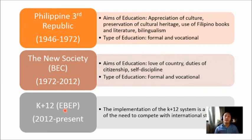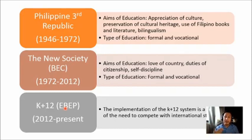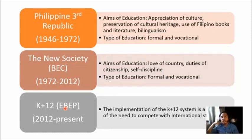During the Philippine Third Republic (1946–1972), research became more prevalent and greatly helped in facilitating the expansion and improvement of the Philippine curriculum. The aims of education were appreciation of culture, preservation of cultural heritage, and the use of Filipino books and literature. Bilingualism emerged as a feature, with both formal and vocational education offered. The largely traditional curriculum became more progressive in methodology, and the medium of instruction was Filipino and other foreign languages, especially English.